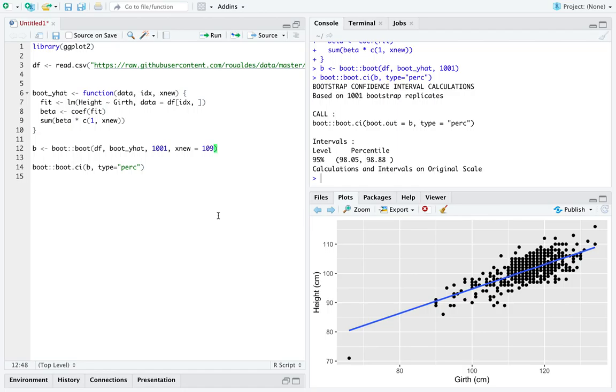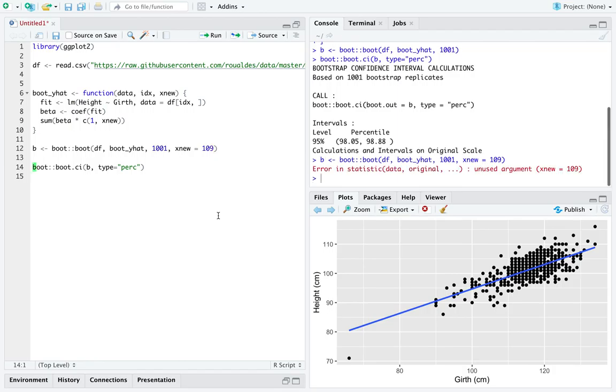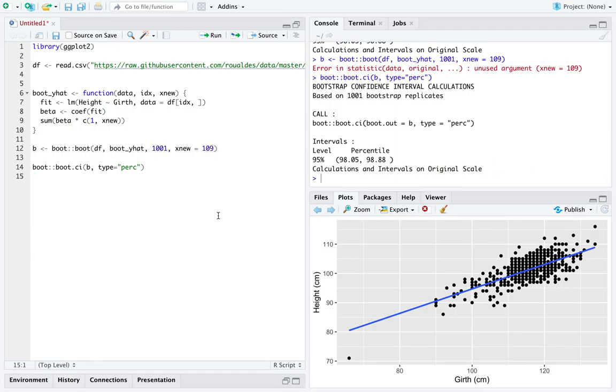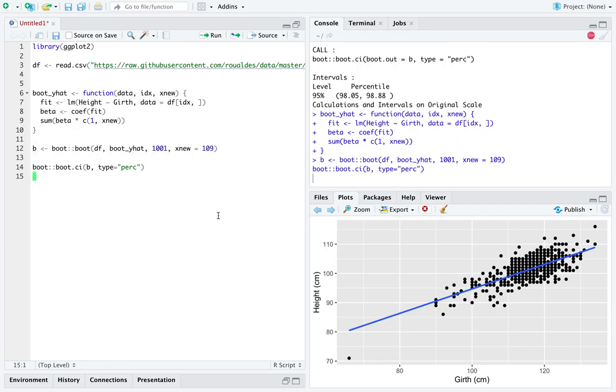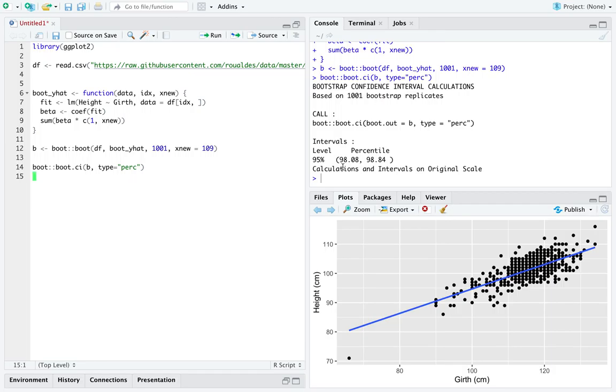So let's say we got 98.05 to 98.88. When we rerun this, because the bootstrap procedure is random, we will get something slightly different. But it should be really very close to what we had before, 98.08 and 98.84. That is incredibly close.